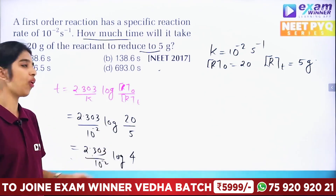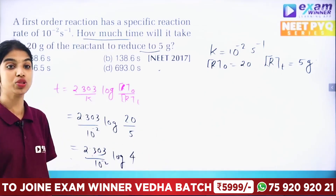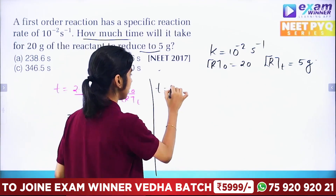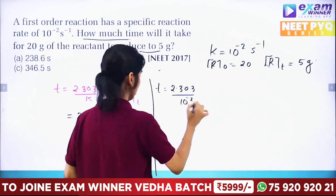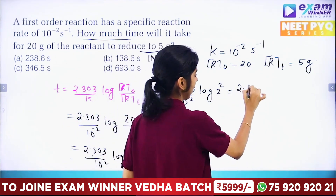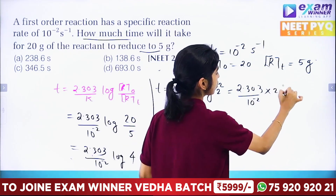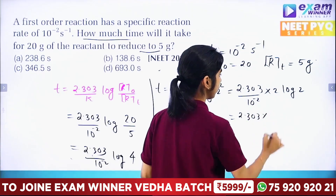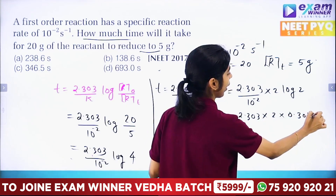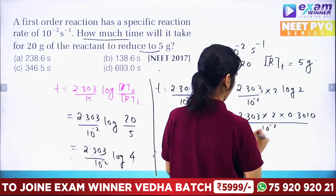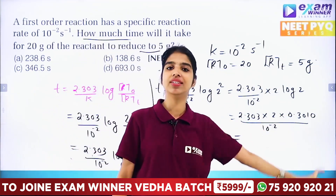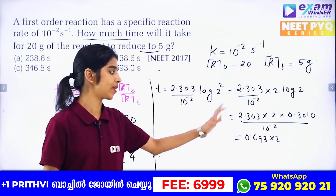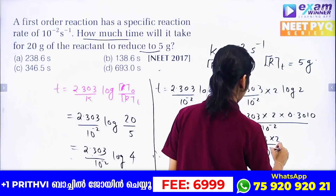Log 4 = log 2² = 2 log 2. Therefore, time = 2.303 / 10⁻² × 2 log 2. Since log 2 = 0.3010, this gives 2.303 / 10⁻² × 2 × 0.3010, which equals 0.693 × 2 / 10⁻².